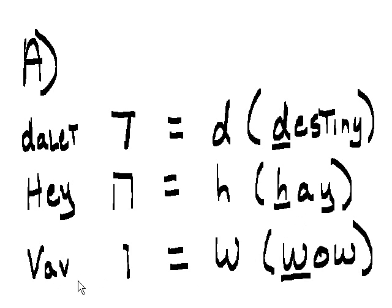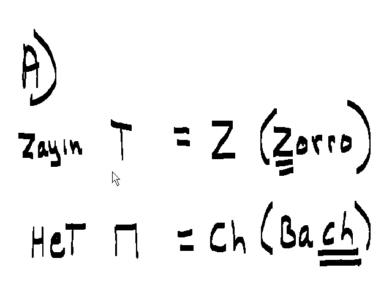Vav or Wow is W as in wow. Zayin is Z as in Zorro. Het is as in Bach.